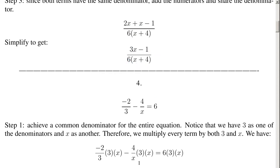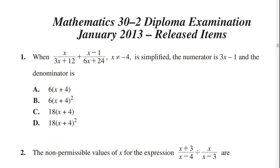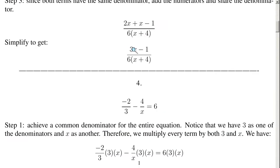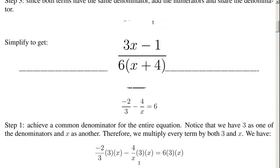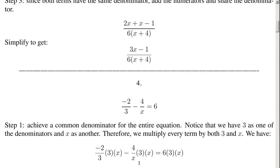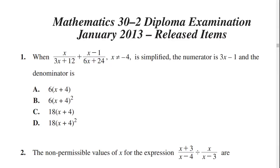Now let's go back to the problem. It asks: the numerator is 3x minus 1, and the denominator is what? Well, the numerator is 3x minus 1, and the denominator is 6 times (x plus 4). Our answer is A.